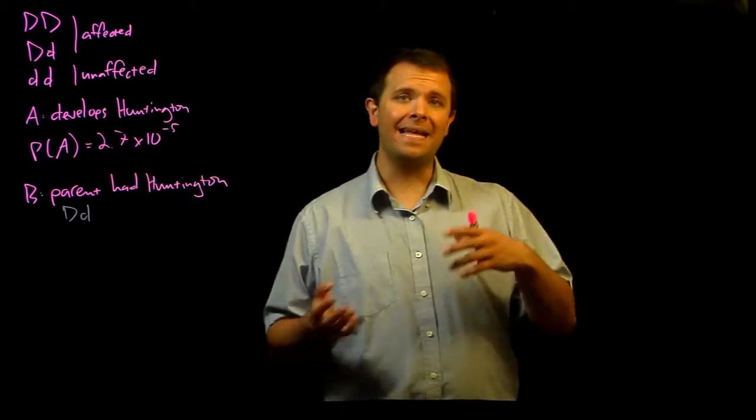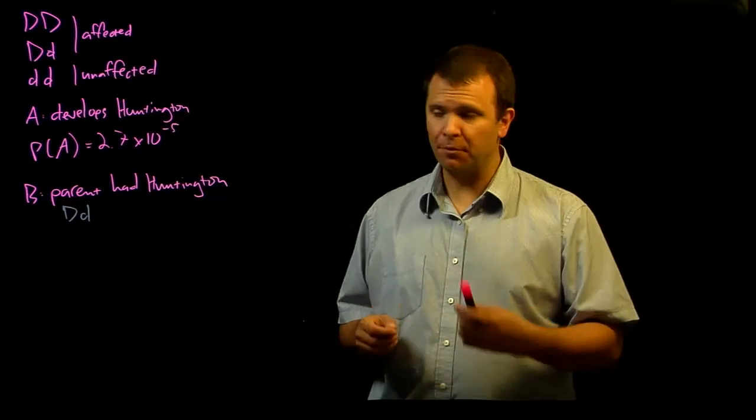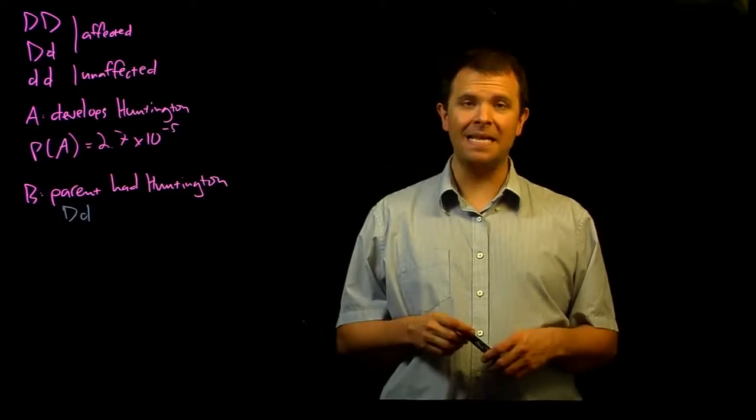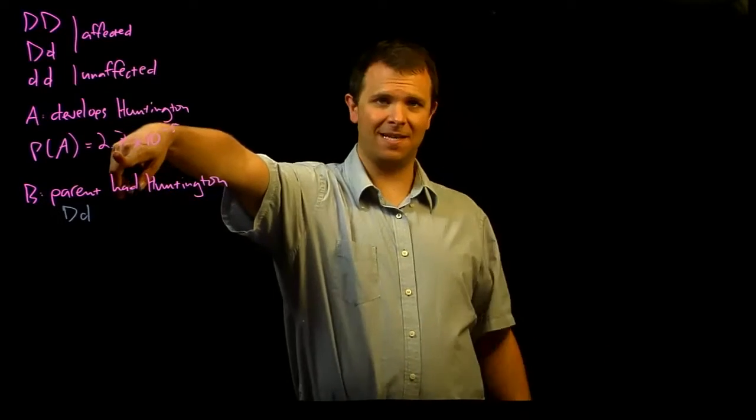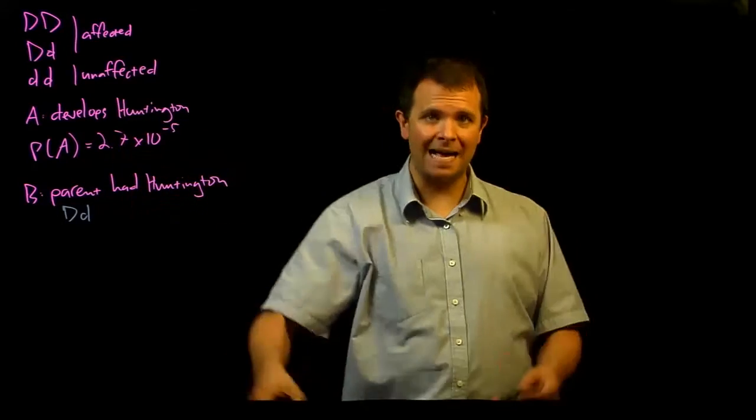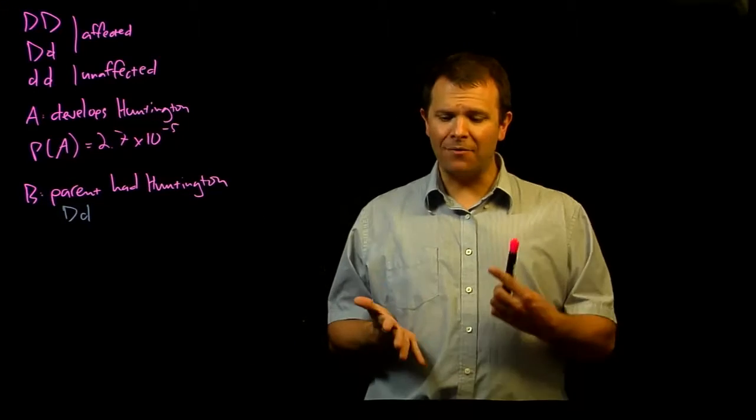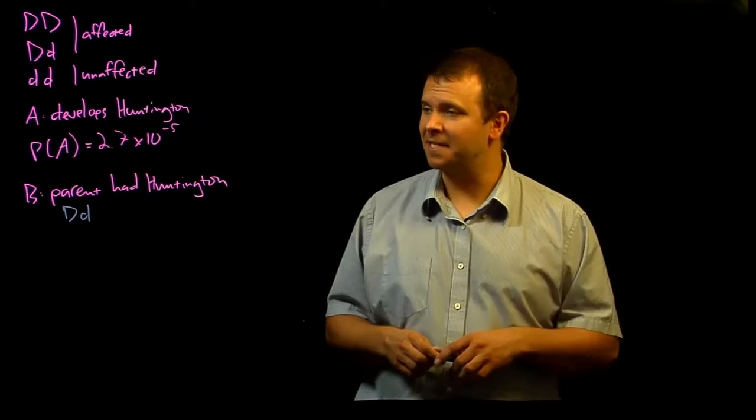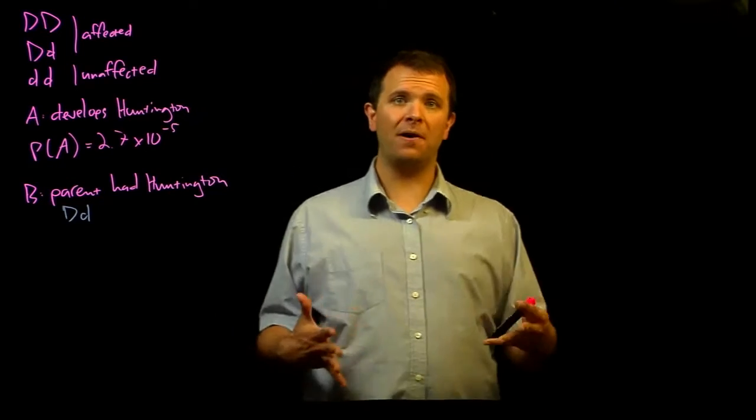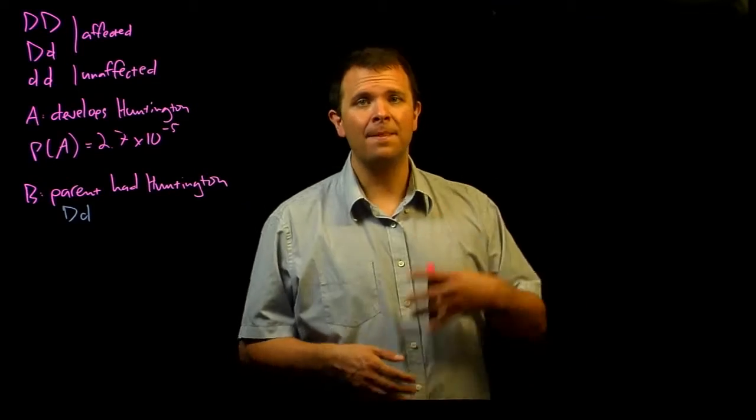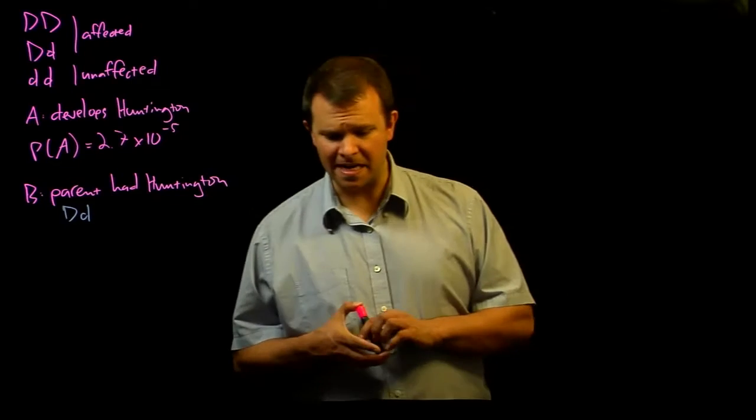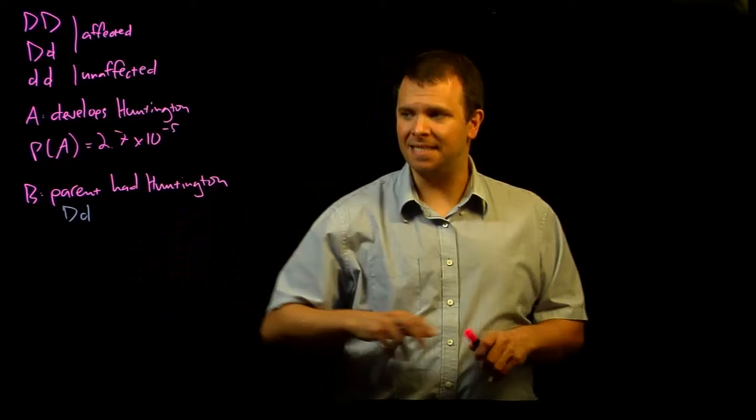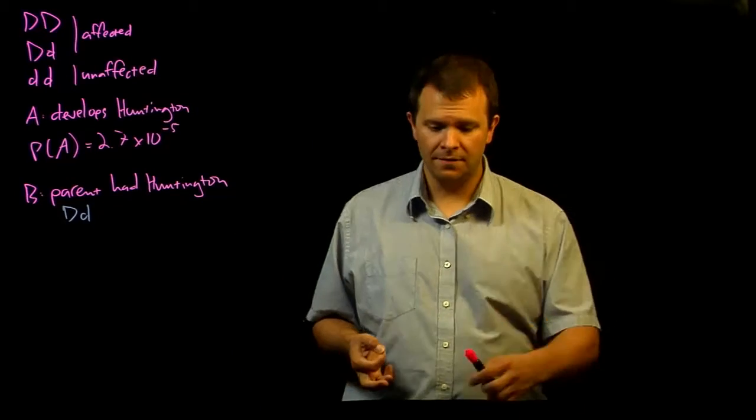And since that is the parent's genotype, then the probability that our randomly selected person whose parent has this genotype develops Huntington is not 2.7 times 10 to the fifth because we have some additional information. We now know that this person's probability of developing Huntington is 0.5. There's a 50% probability that they're going to receive this dominant disease-causing allele from their parent.